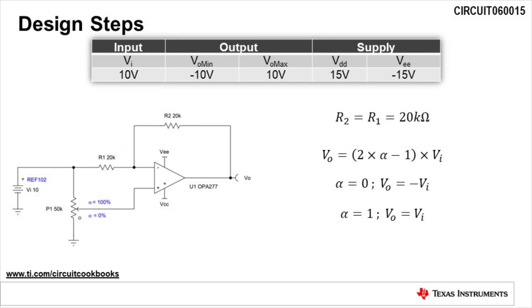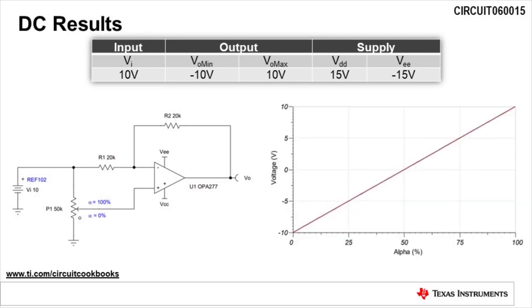This equation shows that for a potentiometer setting of 0%, alpha equals 0, and the output voltage is equal to the negative of the input voltage. For a potentiometer setting of 100%, alpha equals 1, and the output voltage is equal to the input voltage. A sweep of the potentiometer from 0% to 100% yields an output voltage from negative 10 volts to 10 volts. This verifies the functionality of the circuit.